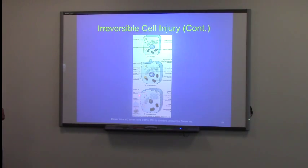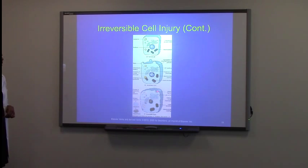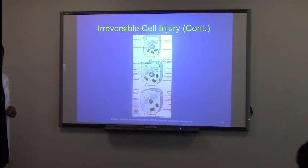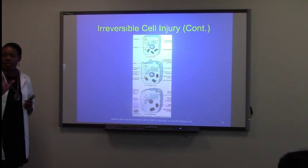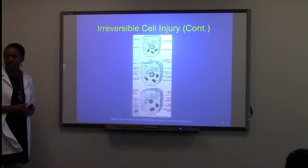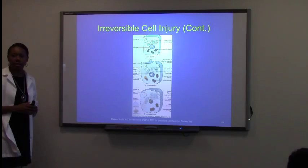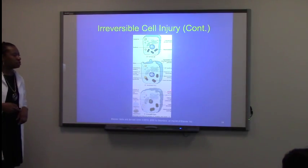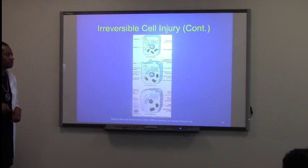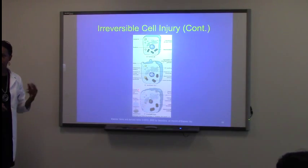When you get down to the irreversible cell injury, what happens here is that you will get the cell membrane starting to lyse. Once the cell membrane starts to lyse, the cell is done — there's no surviving that. And the other thing is that the rest of the organelles will also start to lyse and start to disintegrate.